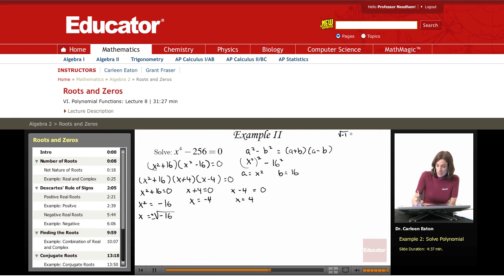And since I know that negative 1 equals i, I can rewrite this as x equals plus or minus i times the square root of 16. Well, the square root of 16 is 4.